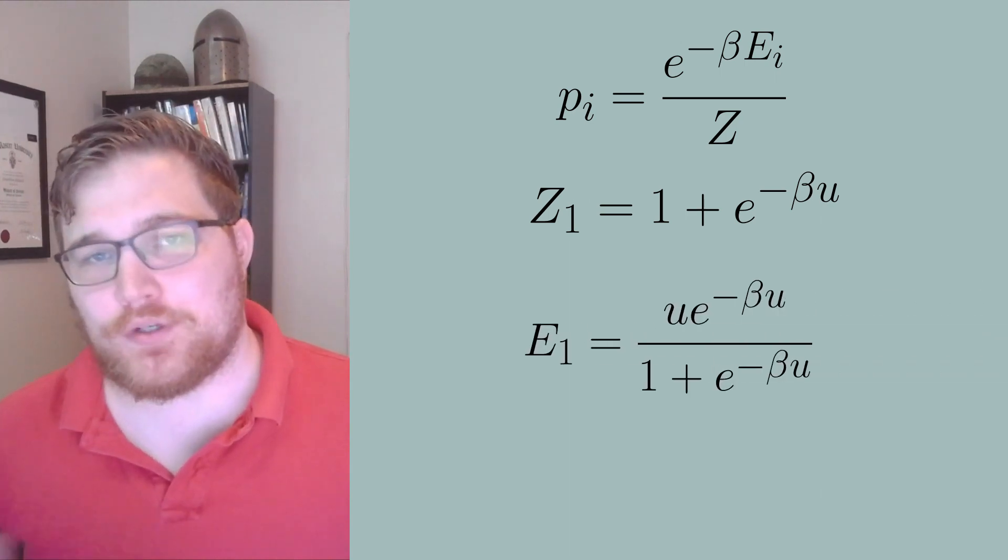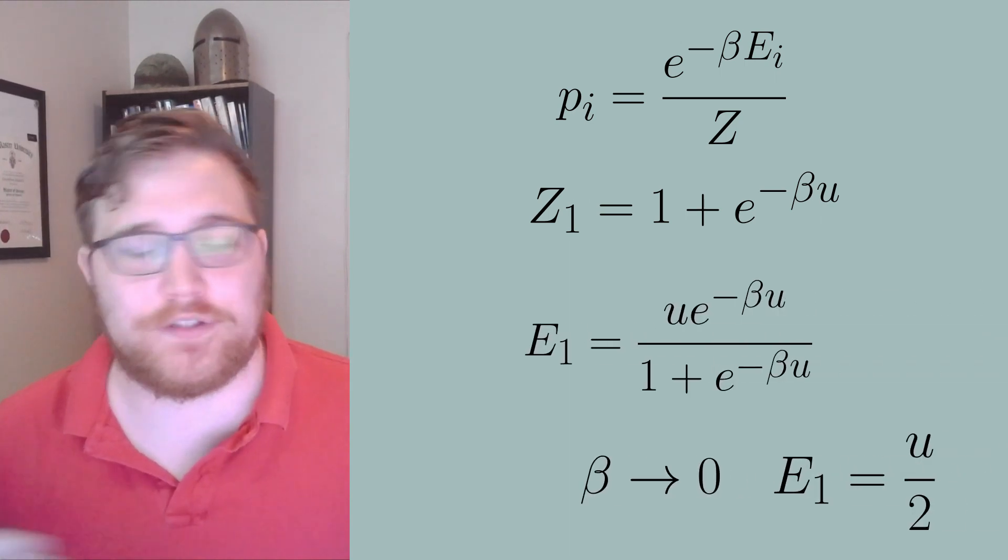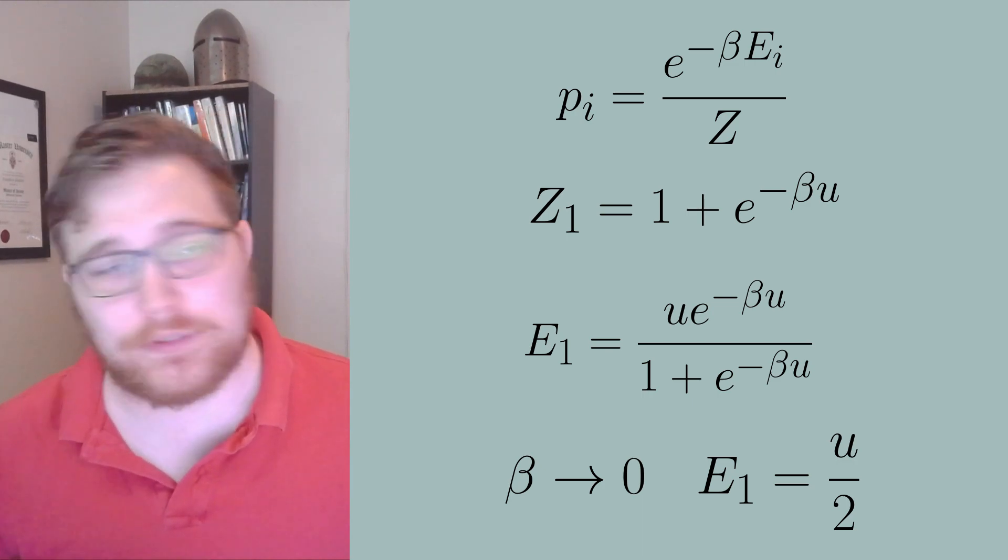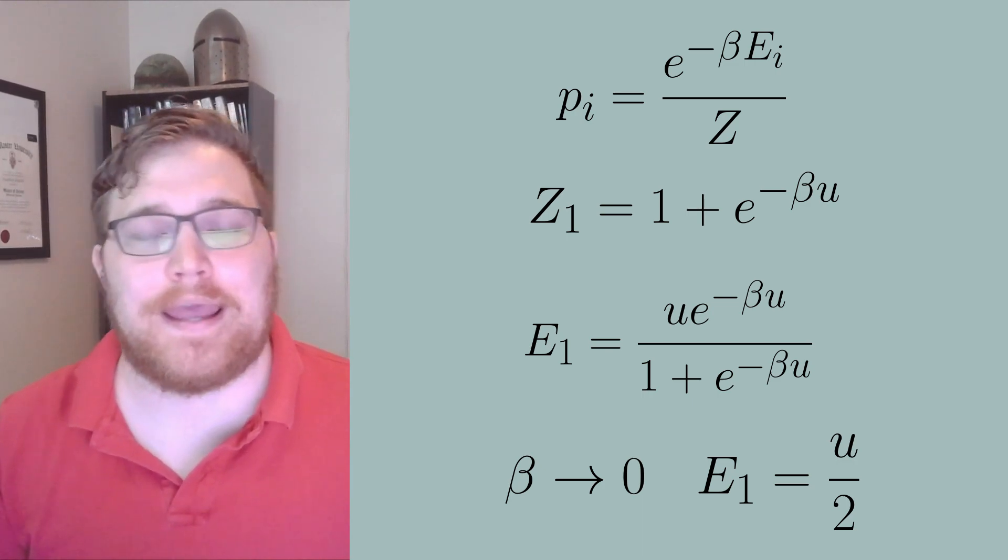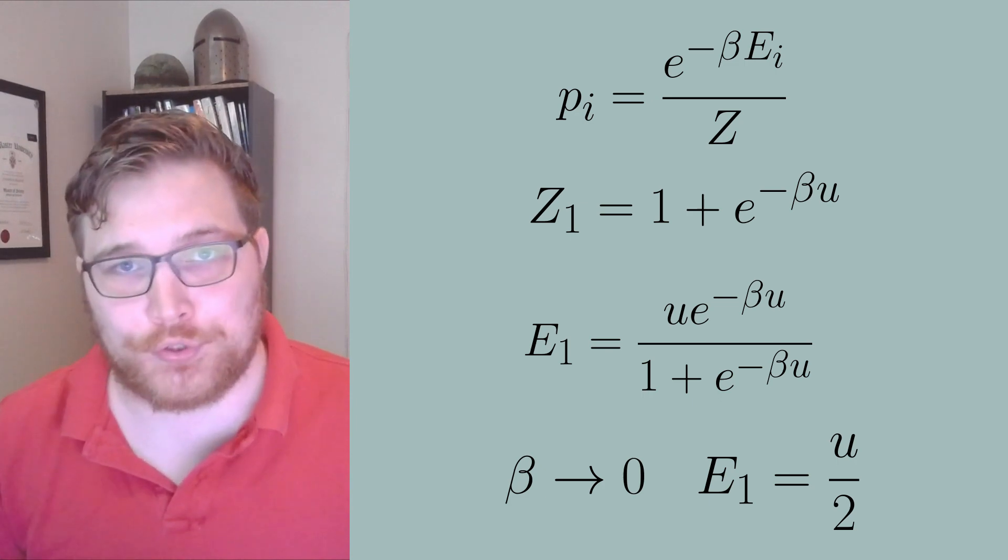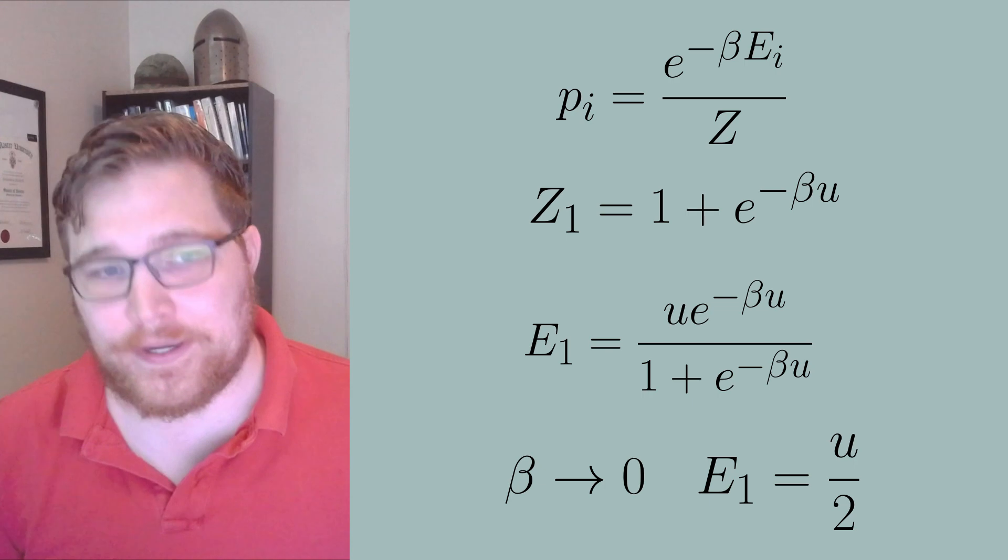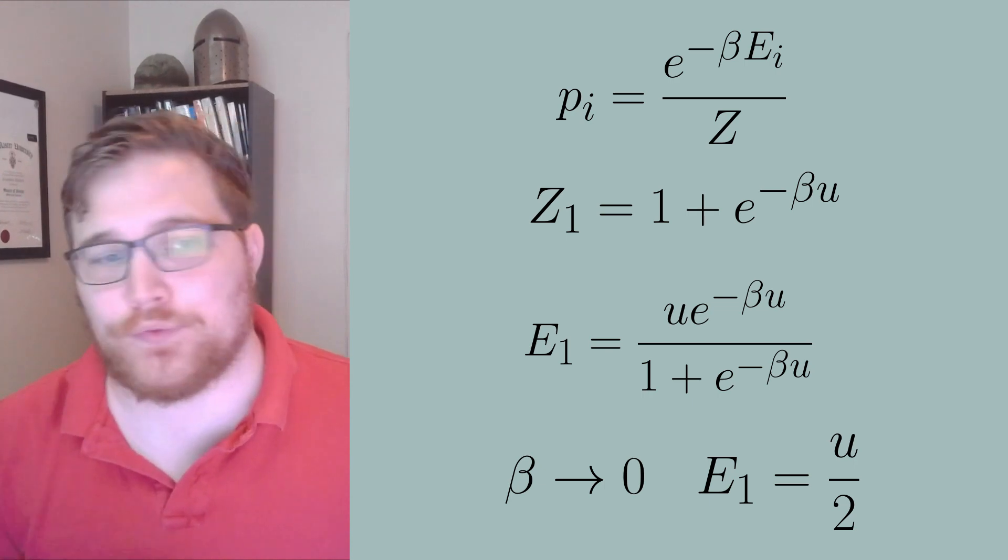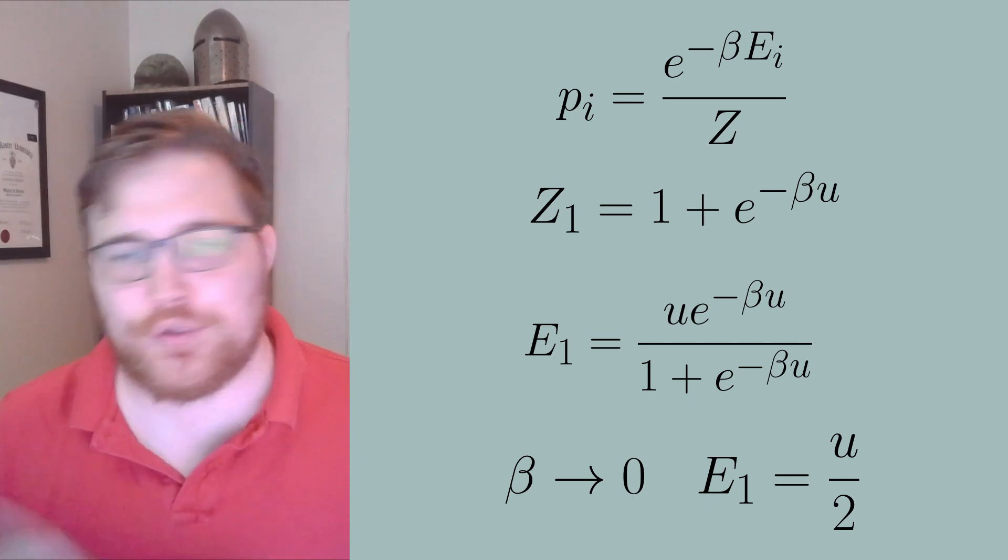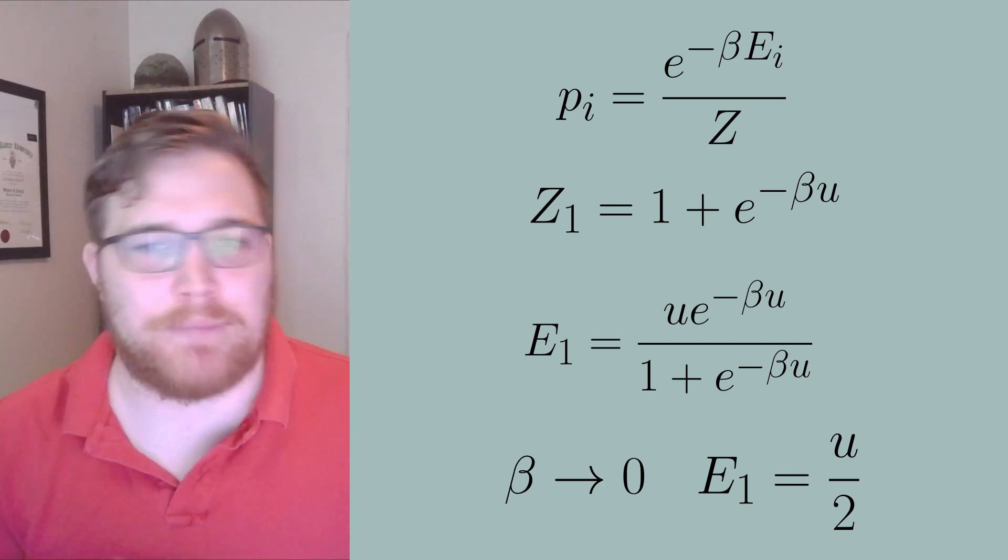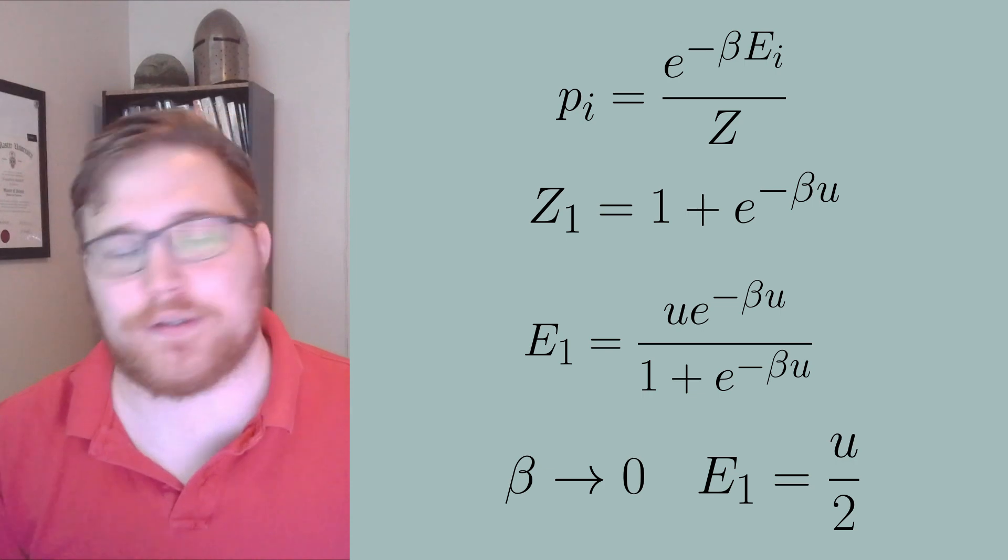Taking beta to zero is equivalent to taking temperature to infinity, as we expect the usual relation in statistical mechanics, as beta is inversely proportional to the thermodynamic temperature. This then gives us the total energy as E is equal to u over two. So the positive temperature regime cannot describe the equilibrium that we set by describing our microcanonical ensemble.